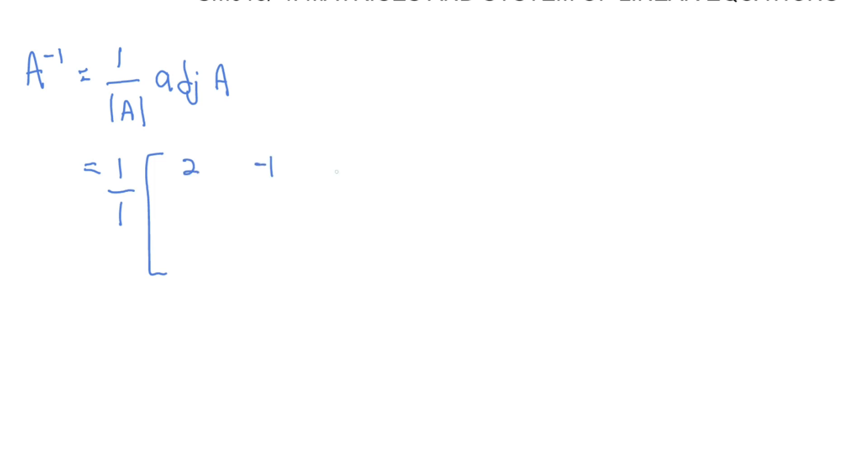You times it with adjoint A. So one over one times it with two, negative one, negative two, negative one, one, zero, negative two, one, three. And you will have the final solution: two, negative one, negative two, negative one, one, zero, and negative two, one, three.